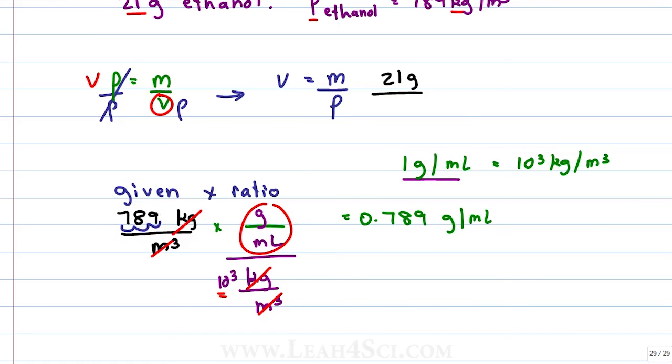We have just under a thousand kilograms, which means we have just under one gram, and how much less? Well, 0.789 of a thousand, which would give us 0.789 of a gram.